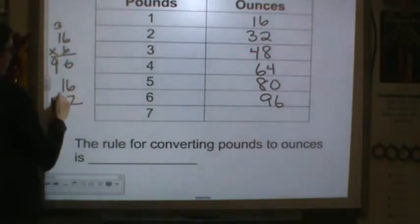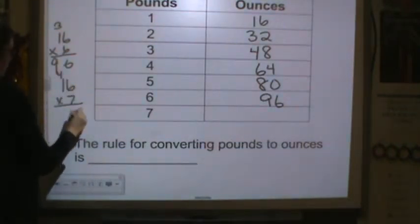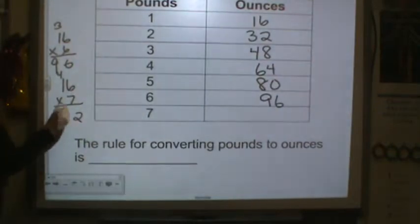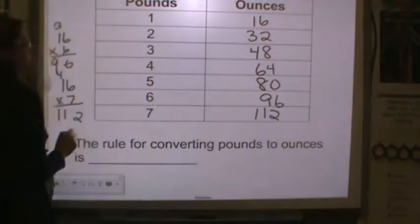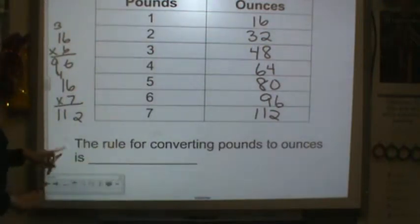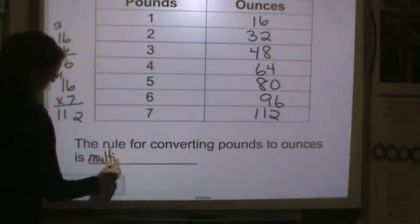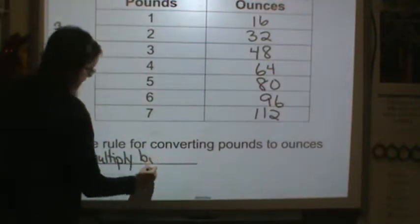And seven, so seven times 16, seven times six is 42. Seven times one is seven plus four is 11, so we have 112. Okay so the rule for converting pounds to ounces is multiply by 16.